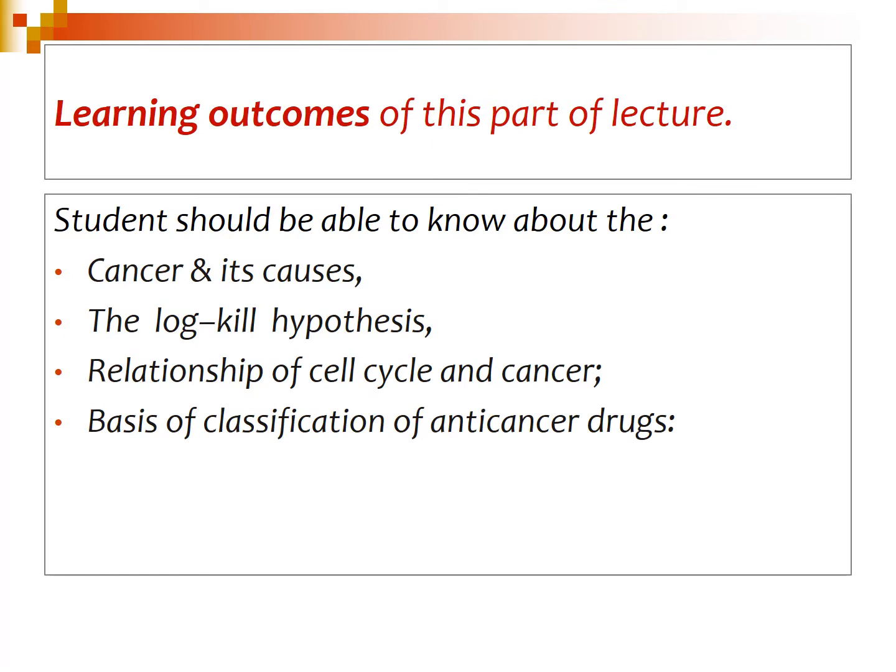In this first part of the lecture, we will try to understand cancer, its causes, the log kill hypothesis, and the relationship of the cell cycle and cancer. These three aspects have already been discussed in physiology and pathology. Regarding pharmacology, we will depend upon these aspects and then classify the anti-cancer drugs on the basis of cell cycle and chemical structure.